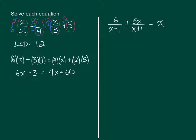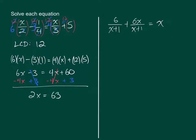From here, all I need to do is get all of the X's on the left-hand side. I'm left with a positive number of X's, and I'm going to add 3 to both sides to get all of the constants on the right. When you simplify all of this down you will get 2X equals 63. The last step is to divide both sides by 2 to isolate X, so X equals 63 over 2.